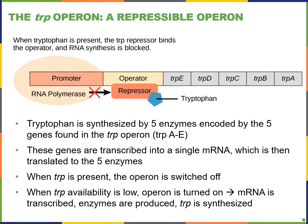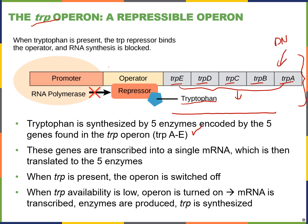Our first detailed exploration of the operon is the tryptophan operon. Tryptophan is an amino acid found in our proteins. In prokaryotes like E. coli, five enzymes are needed to make tryptophan, and the five genes that encode those enzymes — trpA through trpE — are found in this operon. The operon is DNA that will be transcribed into messenger RNA containing those five genes, then translated into the five enzymes to produce tryptophan. Since tryptophan is incorporated into a variety of proteins, this operon is usually on.